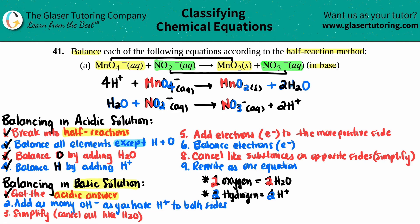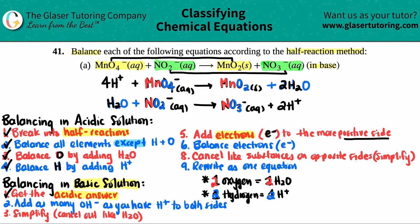Now we have to balance the charges by adding electrons (e⁻). You always add electrons to the more positive side, bringing it down to match the more negative side. For the top half reaction, I find the total charge on the left: four H⁺ gives +4, and one MnO4⁻ gives −1, so the left side total charge is +4 plus −1 equals +3.